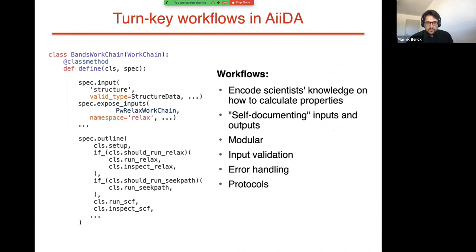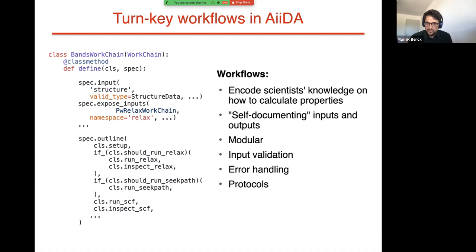As an example, one of the workflows you'll be running in today's tutorial is the bands work chain, which calculates the band structure for an input structure you provide. The nice part about these workflows is they encode the knowledge of scientists. This work chain was written by one of my previous collaborators, and now I can rely on that knowledge to calculate a specific property and improve upon it. By working together on these workflows, we can build a comprehensive set that is very robust and efficient for calculating the properties of interest.